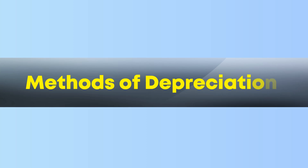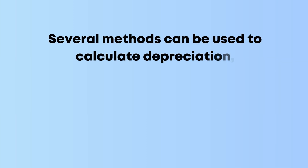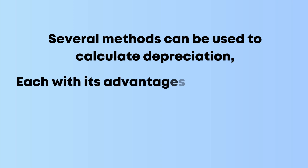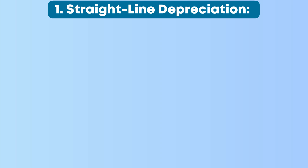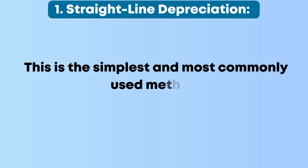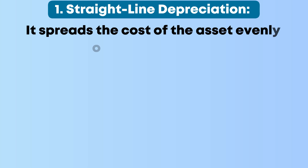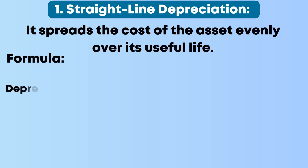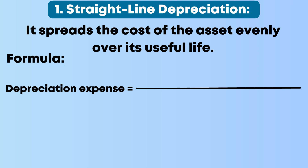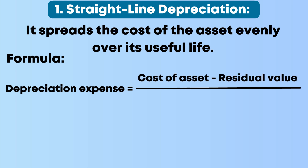Methods of depreciation: Several methods can be used to calculate depreciation, each with its advantages and applications. Number 1: Straight-line depreciation. This is the simplest and most commonly used method. It spreads the cost of the asset evenly over its useful life. The formula is: Depreciation Expense = (Cost of Asset − Residual Value) ÷ Useful Life.